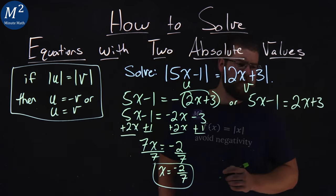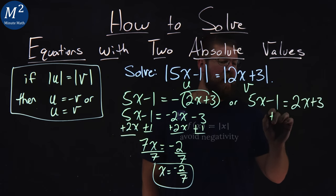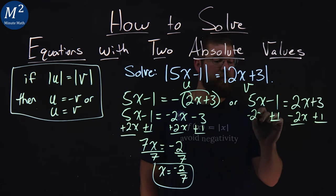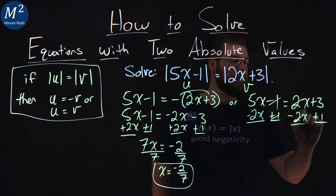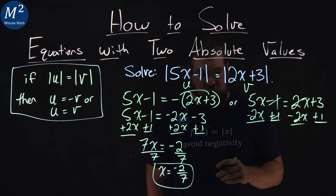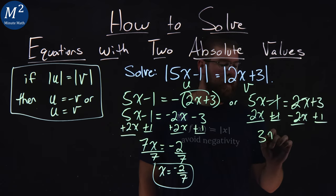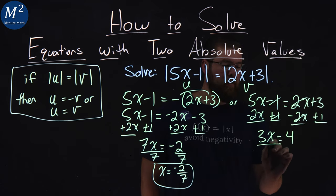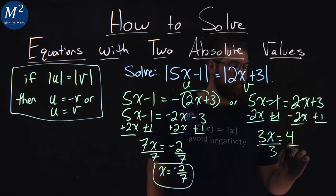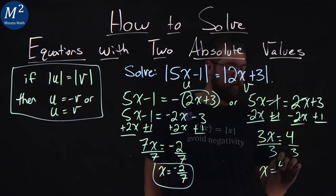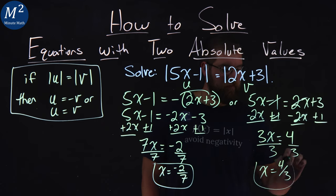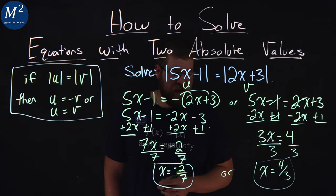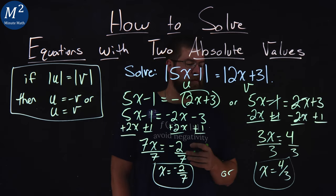The second one, same idea. Combining like terms: I add 1 to both sides and subtract 2x from both sides. The 1's cancel, the 2x's cancel. 5x minus 2x is 3x, and 3 plus 1 is 4. Dividing both sides by 3, x equals positive 4 thirds. Our two solutions are x equals negative 2 sevenths, or x equals 4 thirds.